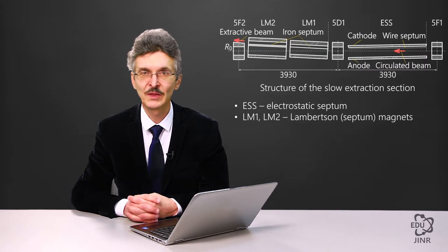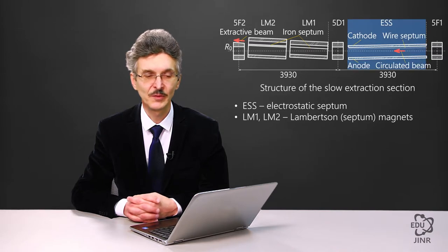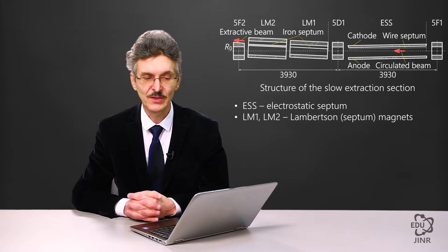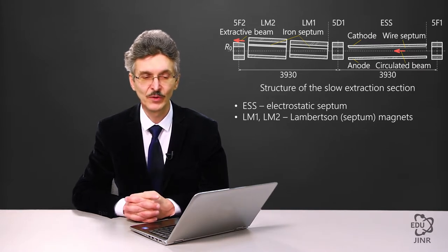At the nucleotron, the system of slow beam extraction comprises three principal elements: an electrostatic septum and two sections of a Lambertson magnet. The latter are also septum magnets of a special design.